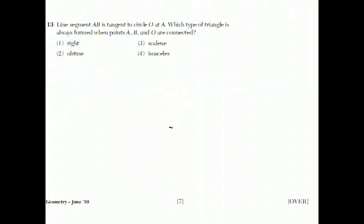Move on to question number 13. Line segment AB is tangent to circle O at A. Which type of triangle is always formed when points A, B, and O are connected? Don't try to do a question like this without drawing a little sketch. Here is circle O. Here is a point, which I'll call A. And it says it's tangent to the circle at A. That means that if you drew a line here, and you can put B over here, tangent line is a line that touches the circle just once, as opposed to a secant line which crosses the circle in two places.